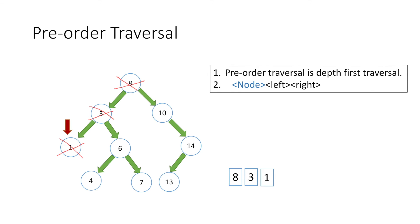Now looking at our rule we need to move left, but node 1 has no left child, and there is no right child either. So we move a node up to node 3, and check our rule. As this node is already traversed and all nodes to its left are also traversed, according to the rule we have to move right.